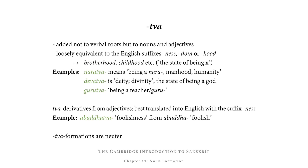-Tva derivatives on the basis of adjectives are best translated into English with the suffix -ness. For example, from abuddha, meaning foolish, we get abuddhatva, foolishness. Nouns formed by means of adding -tva are neuter.